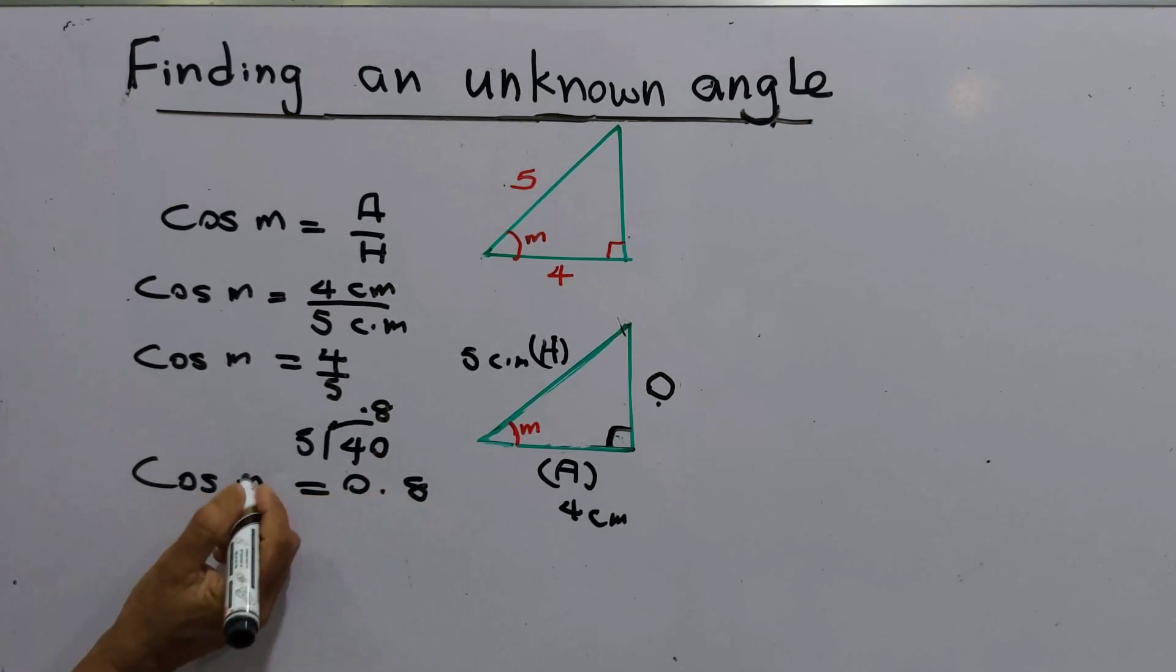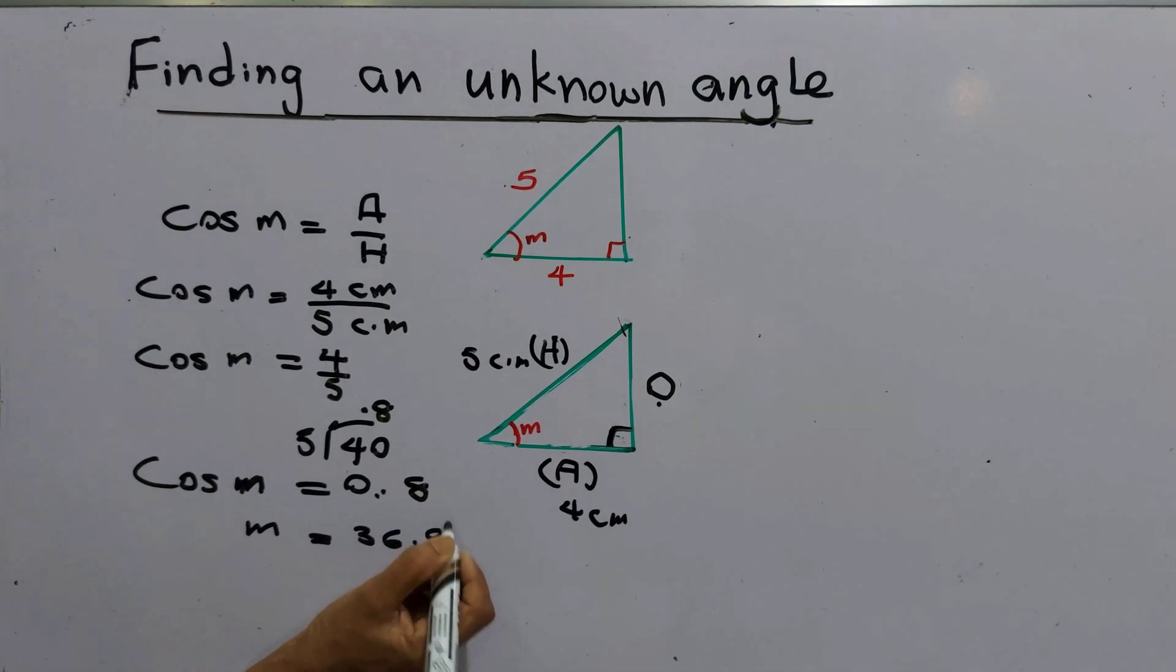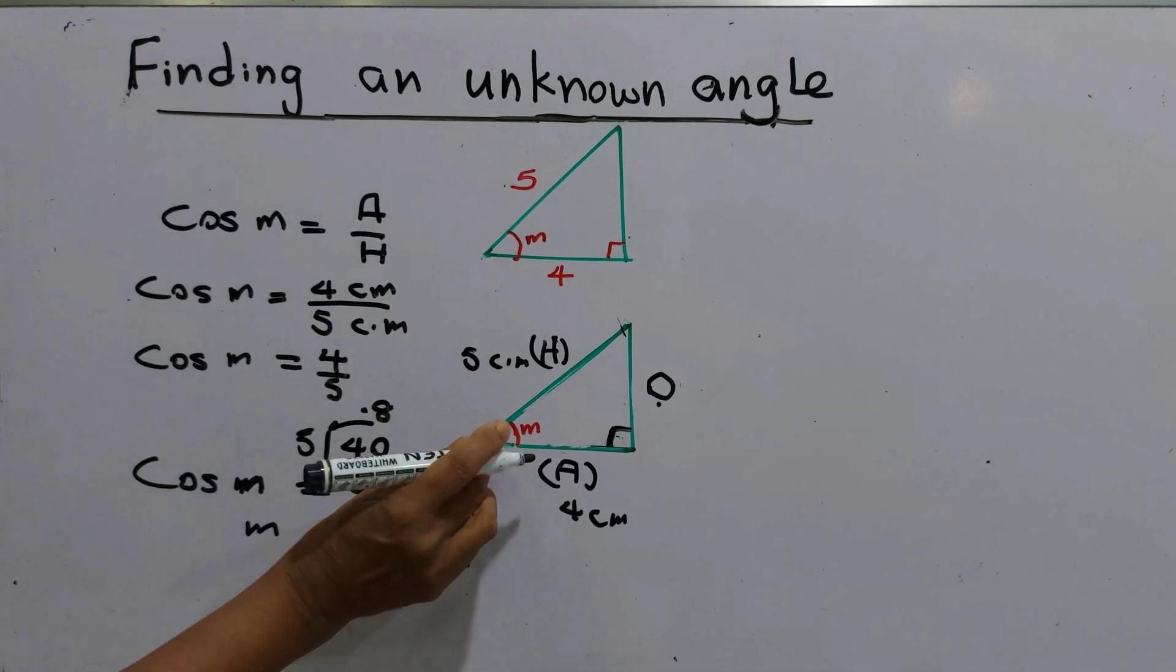When you check in a cosine timetable 0.8 gives the value as 36.9 degrees. This is the value of M.